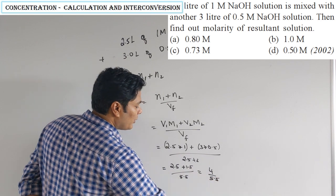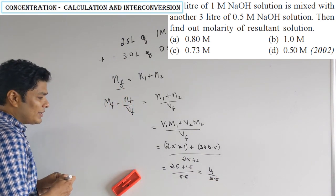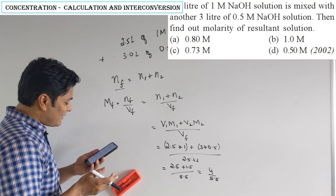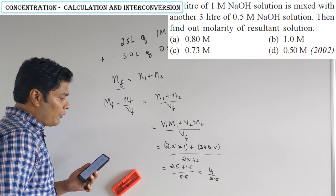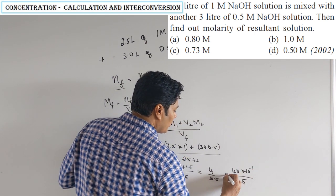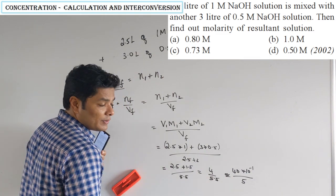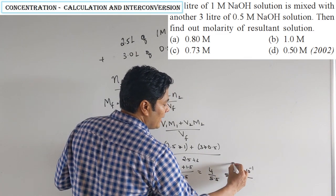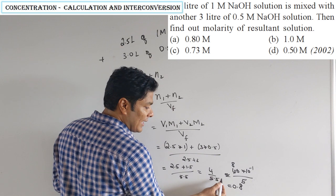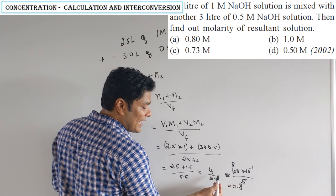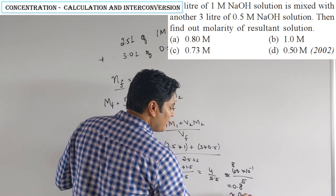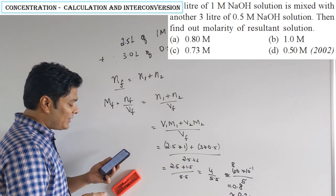The answer options are 0.8, 0.73, and 1.5. To approximate 4/5.5: rewrite as 40×10⁻¹ / 5 ≈ 8×10⁻¹ = 0.8. Since I divided by a smaller number (5 instead of 5.5), the result is slightly too large — about 10% less gives 0.8 − 0.08 = 0.72, so approximately 0.73 is the answer.